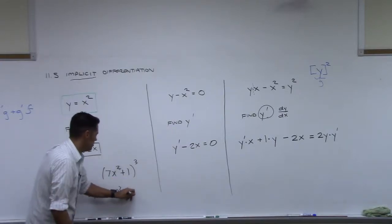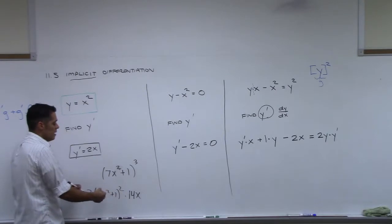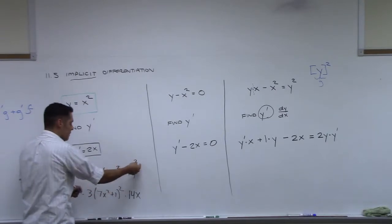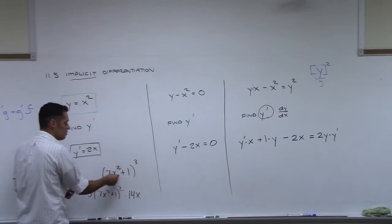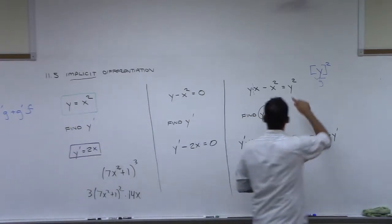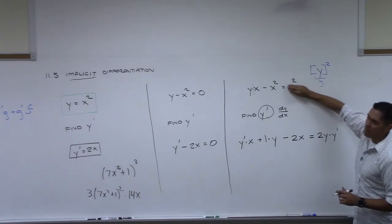Times 14x. So if we have something to a power, the power comes out, we don't touch it, reduce the power by one, and then we take derivative of what's inside. That's exactly what we have to do with this y.